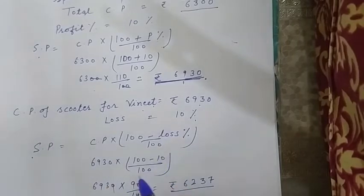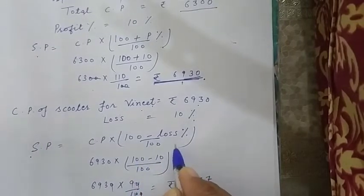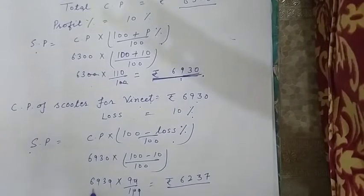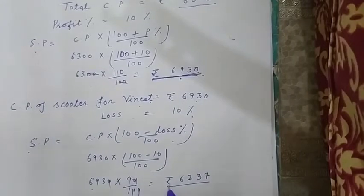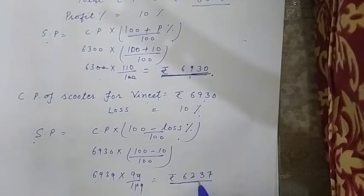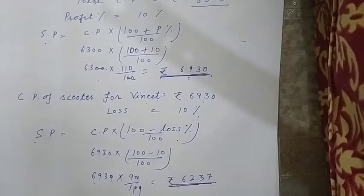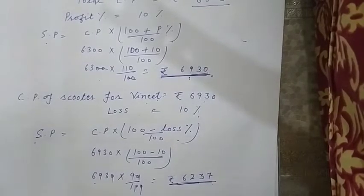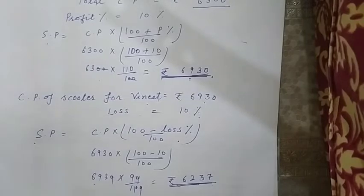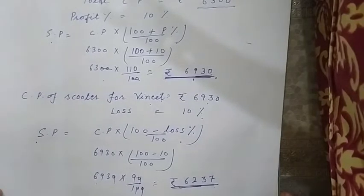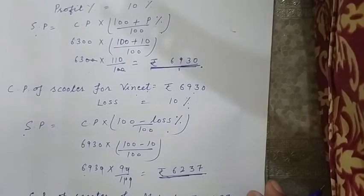Toh selling price kitna aajayega? Toh hum formula apply karayenge? Toh yeh kya ben jayega? 6,000 yeh aapki value aajayegi rupiz 6,237. Joki kya hai? Mukesh ki cost price hai. Jumukesh nye joh scooter buy kiya hai. Uuska cost price hai rupiz 6,237.